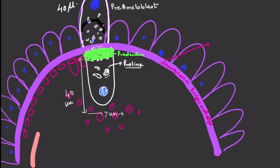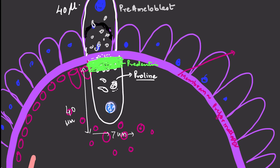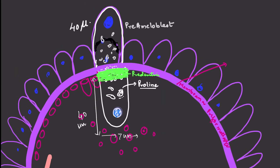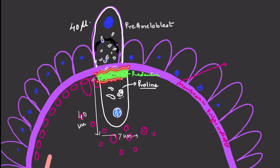When the odontoblast is ready to secrete, the pre-dentine is formed — visible here in green — secreted by the odontoblast measuring 7 micrometers in width and 40 micrometers in height. Simultaneously, pre-ameloblasts differentiate from the inner enamel epithelium. There is a reversal of polarity in the ameloblast — the nucleus moves to the apex, organelles to the base — and signals are sent from the ameloblast to the odontoblast to secrete the first layer of dentine, which is mantle dentine.